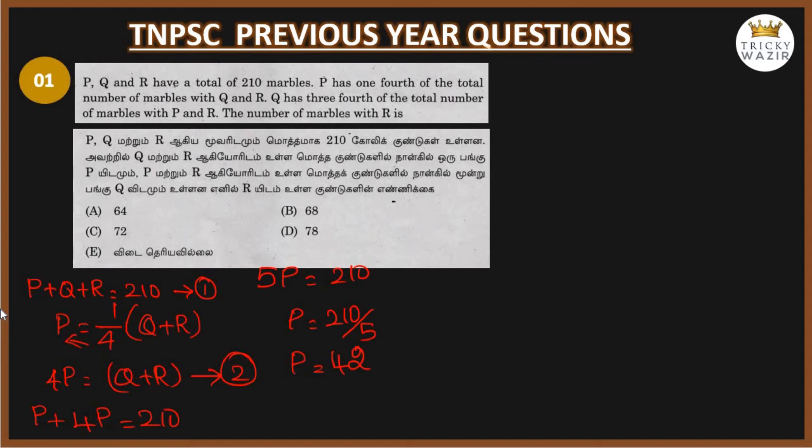Now Q has three-fourth of P plus R total. So 4Q equals 3 times P plus R. From the first equation, P plus R equals 210 minus Q. Substituting, 4Q equals 3 times 210 minus Q. Multiply by 3.